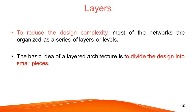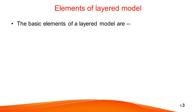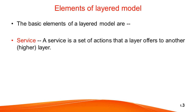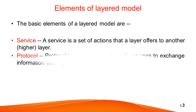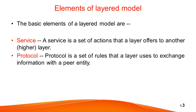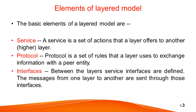There are several elements of a layered model. The first basic element is service — a set of actions that a layer offers to another layer. The next basic element is protocol — a set of rules that a layer uses to exchange information with a peer entity. These rules concern both the contents and the order of the messages used. The next basic element is interfaces — between the layers, service interfaces are defined, and messages from one layer to another are sent through those interfaces.